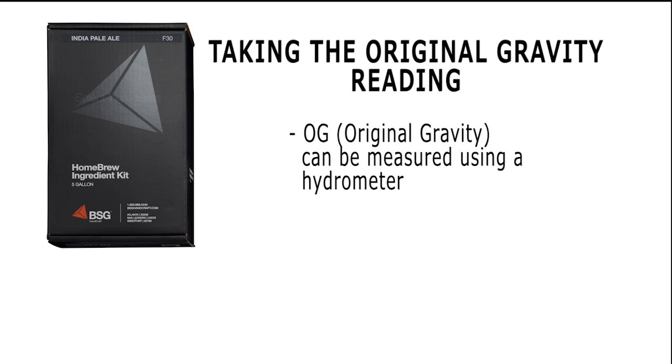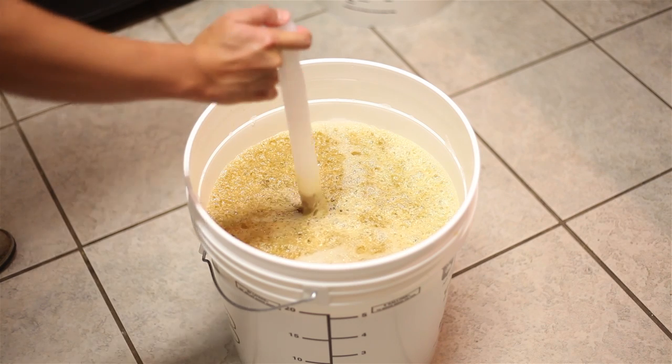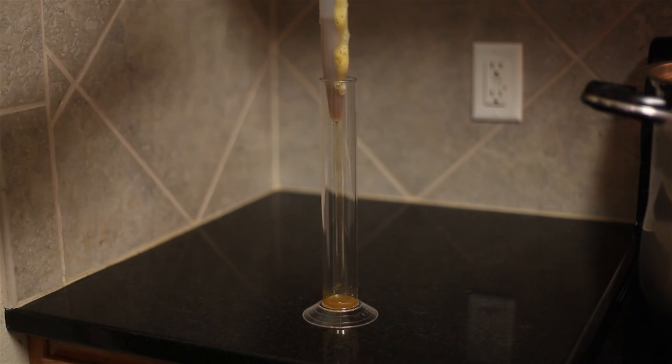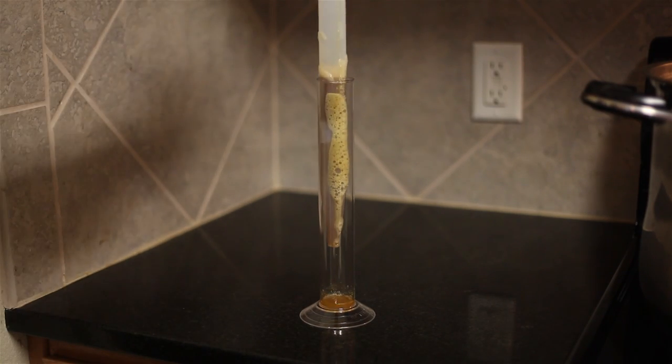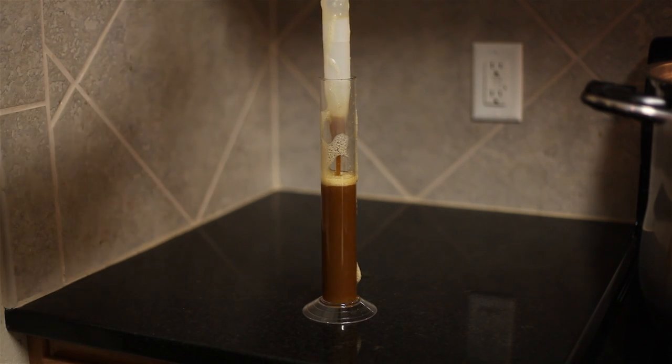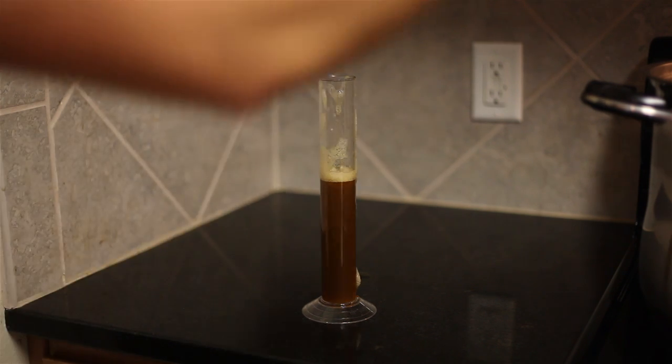This first gravity reading, known as the original gravity, or OG, can be taken using a hydrometer. A hydrometer is a tool that is used to measure specific gravity. In order to take a reading, you must first retrieve a sample of your wort and place it in a container. A hydrometer test jar or cylindrical container that is similar in size will work best. Most hydrometers come packaged in a tube that will work as well. To retrieve the sample, a beer thief works best, but you can also use a turkey baster. No matter what tool you choose to use, make sure that it is properly sanitized first.